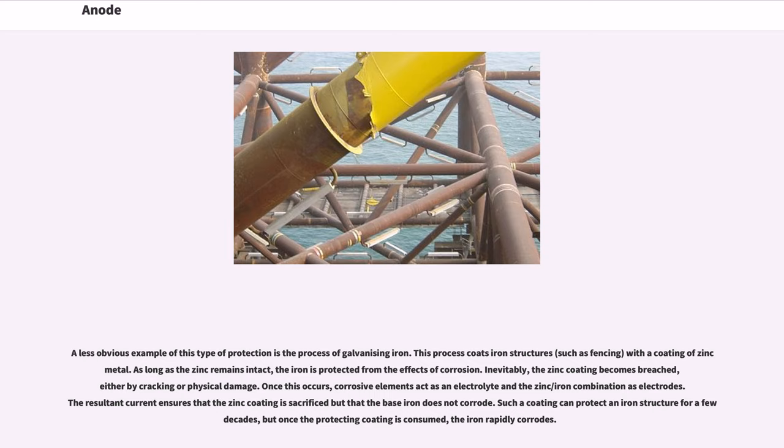A less obvious example of this type of protection is the process of galvanizing iron. This process coats iron structures, such as fencing, with a coating of zinc metal. As long as the zinc remains intact, the iron is protected from the effects of corrosion. Inevitably, the zinc coating becomes breached, either by cracking or physical damage.